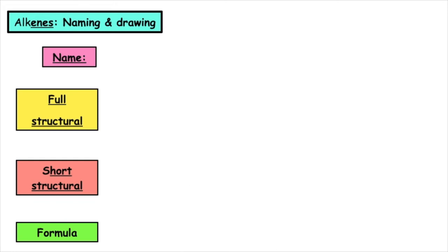When we move on to four carbons, we need to start stating the position of the carbon to carbon double bonds. So first we're going to try but-1-ene. But tells us we have four carbons in a row. One tells us the position.